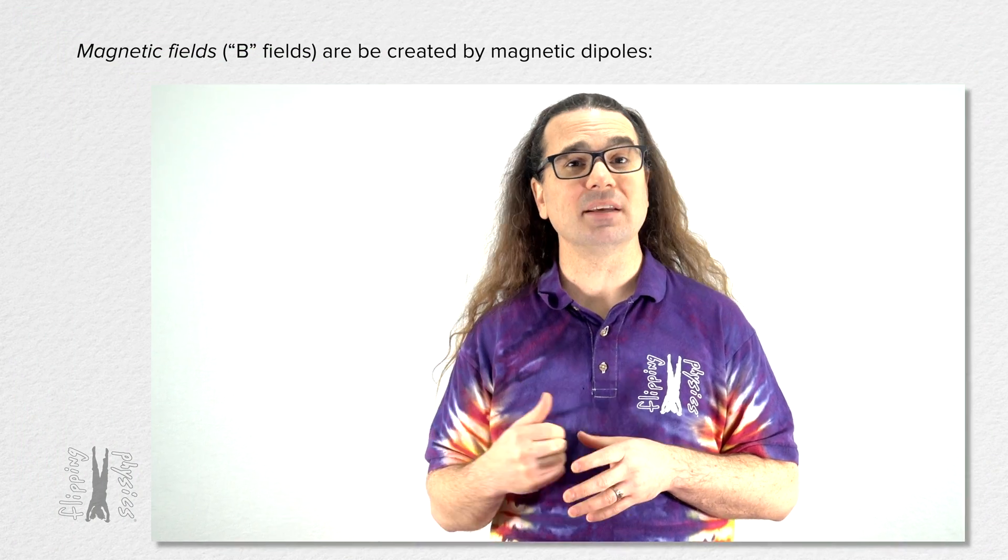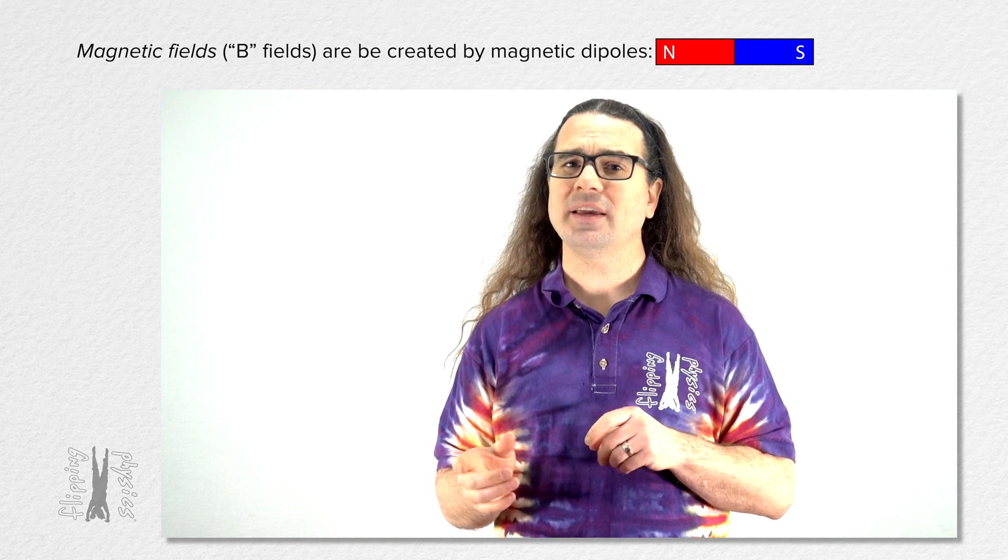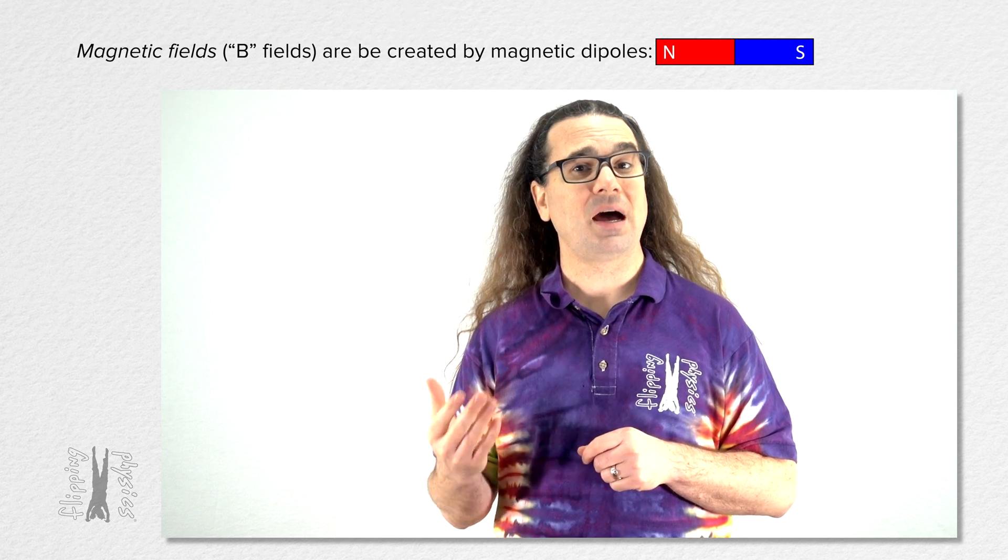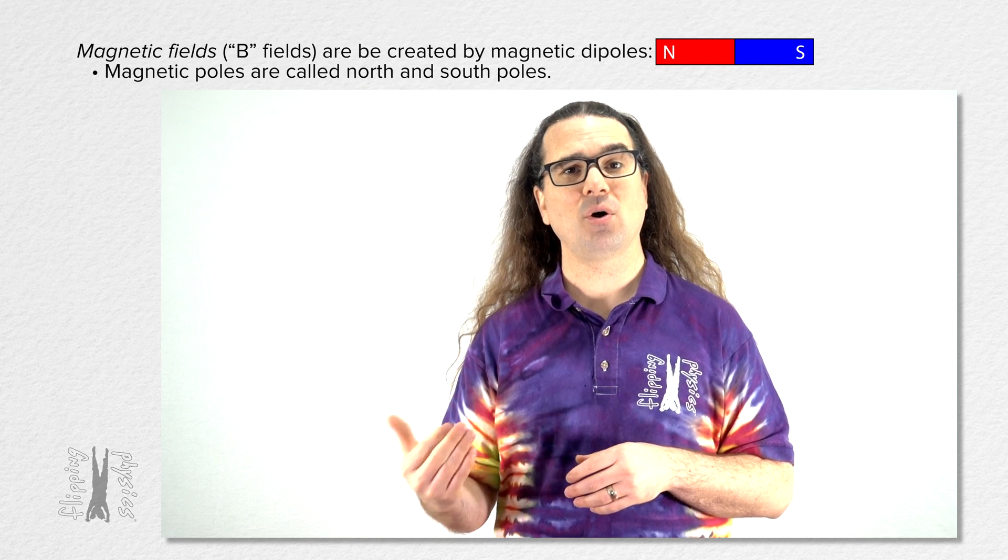Magnetic fields, or B-fields, are created by magnetic dipoles. Just like electric charges are described as positive and negative charges, magnetic poles are described as north and south poles.